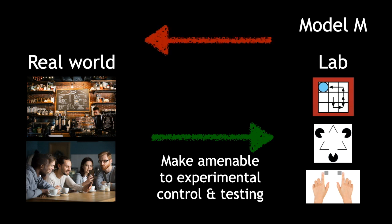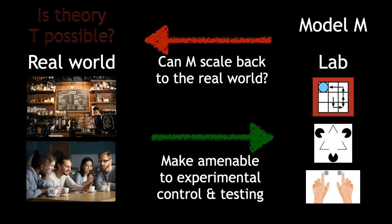Rarely, however, is the question asked if the models or verbal explanations of the observations made in the lab can be scaled back to the real world, where the capacities we really want to explain actually operate. In other words, is the theory we have in mind that may have guided the task models actually possible as an explanation of the target real-world capacity?